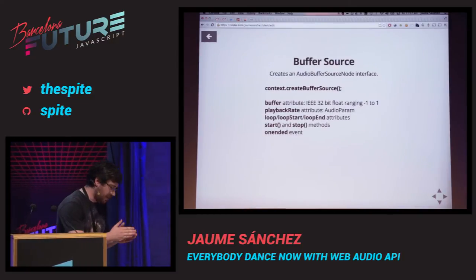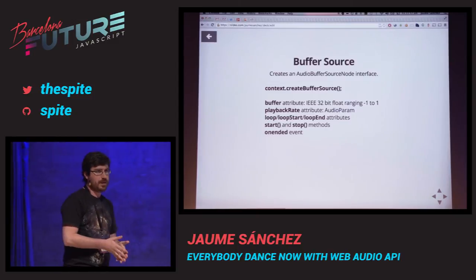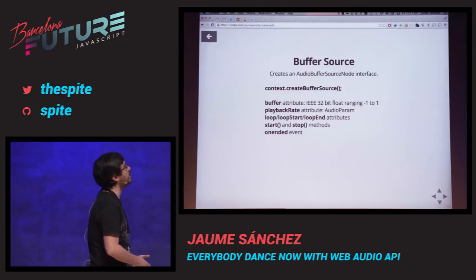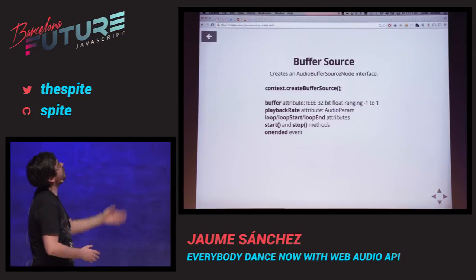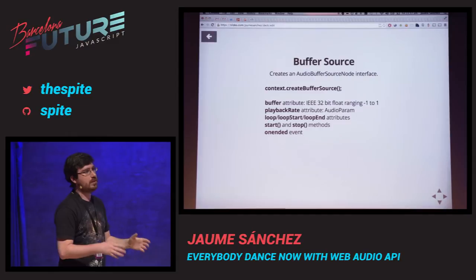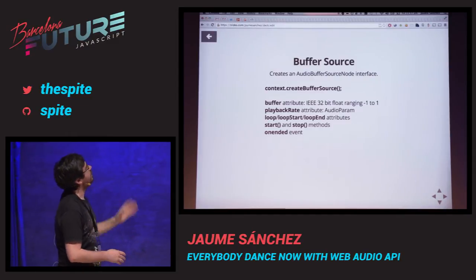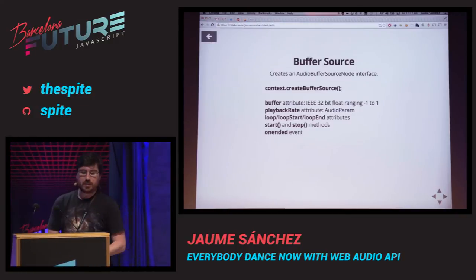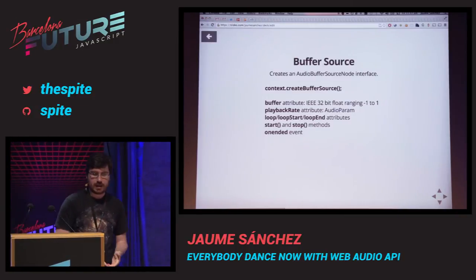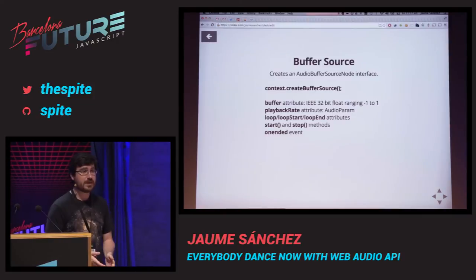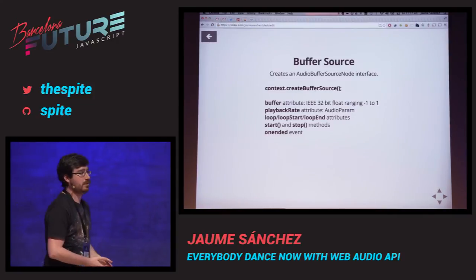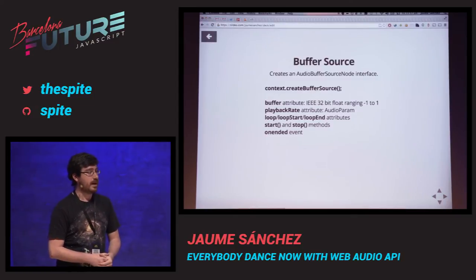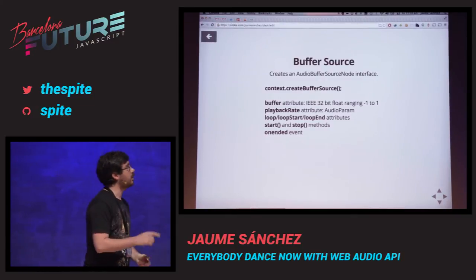Speaking of the specific buffer source, which is probably the one you're going to be using the most because it allows you to play back a sound file. Once you use context.createBufferSource(), the audio buffer source node has a few attributes and methods. The most important one is buffer, which is an array of 32-bit floats ranging from minus one to plus one. This is your raw data, which you would usually load with an XMLHttpRequest.